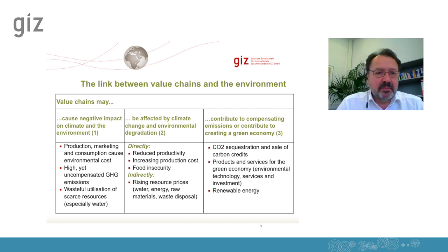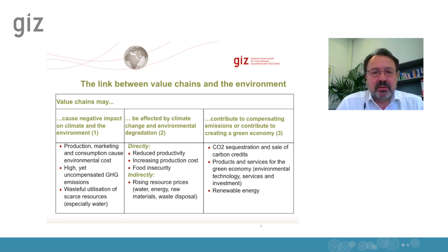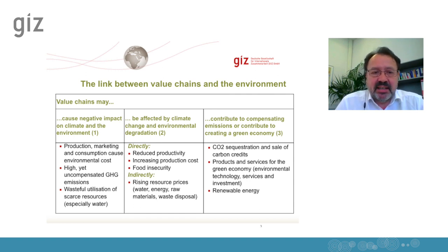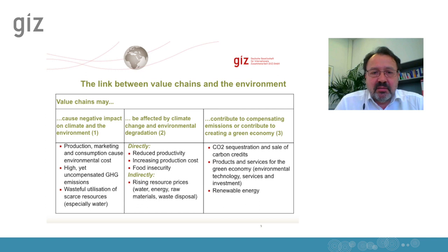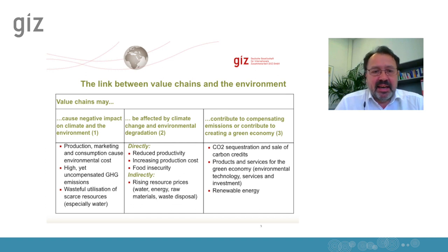First, when you look at the left column, value chains often cause a negative impact on the environment. With any kind of production or transformation, we impact on the natural environment. We replace natural forest areas by farmland or increase greenhouse gas emissions by burning charcoal or petrol in processing or for the transport of goods. Usually, with increasing development of value chains, we may cause higher negative impact on the climate and the environment. And if the energy comes from unsustainable sources, we have a negative impact on the environment.